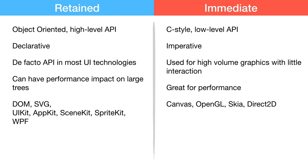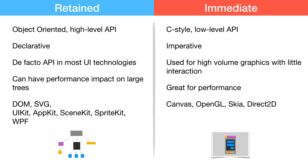Striking examples of Retained mode include the HTML DOM, SVG, UIKit, and AppKit. For Immediate mode, the Canvas API is the best example on the web platform. For gaming engines, you would see OpenGL or Metal in the case of macOS. Skia is a 2D graphics library used by most browsers today, and Direct2D on Windows is also an Immediate mode API. In short, when you need convenience and high-level abstraction, prefer the Retained mode API; when you need the performance, nothing beats Immediate mode.